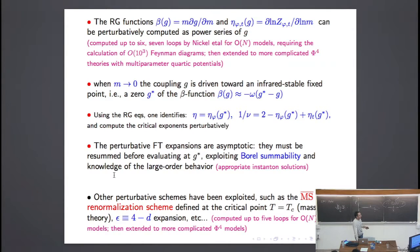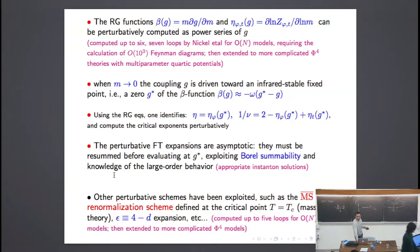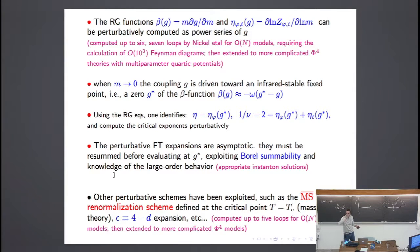If we analyze the normalization group equations — I invite you to look at the textbooks — you can find that when m goes to zero, so when the inverse correlation length goes to zero and the correlation goes to infinity, the coupling is driven toward the fixed point of the beta function, because the fixed point means the zero of the beta function.